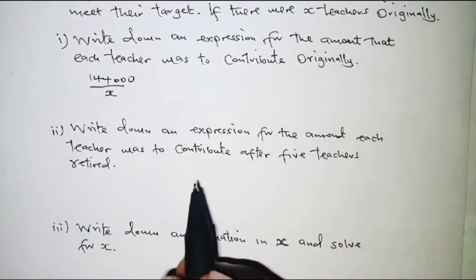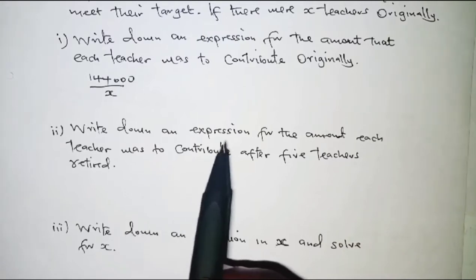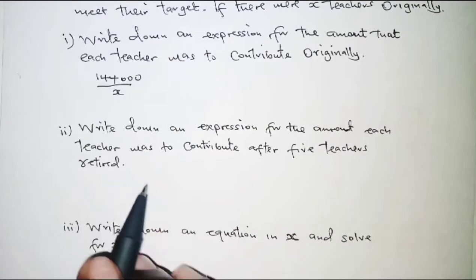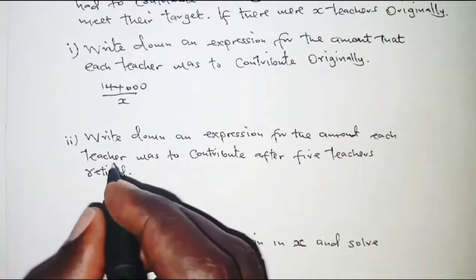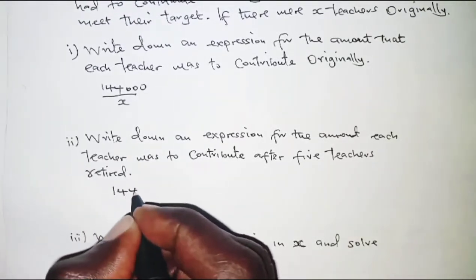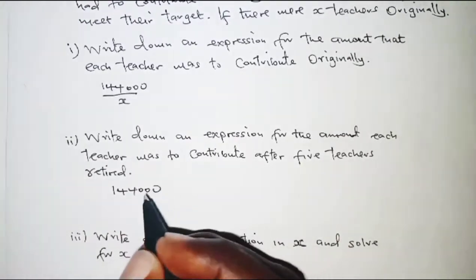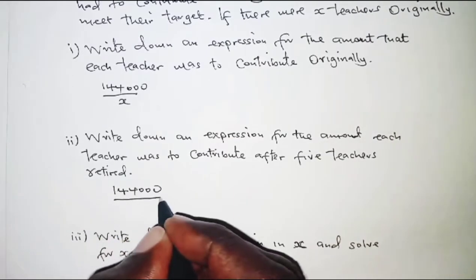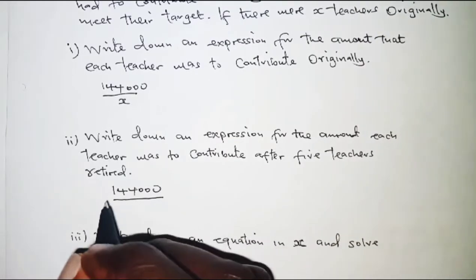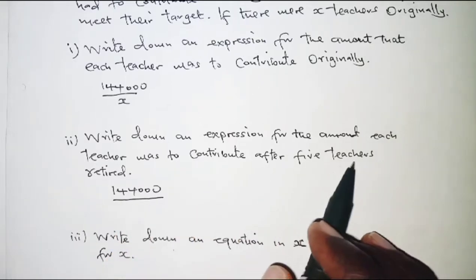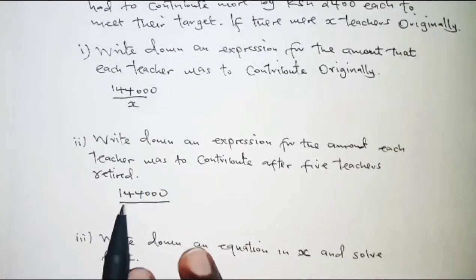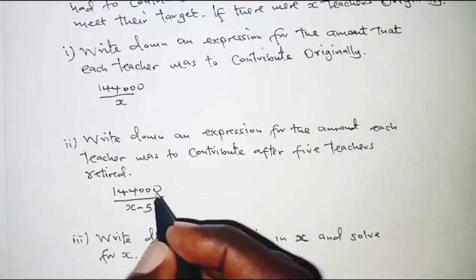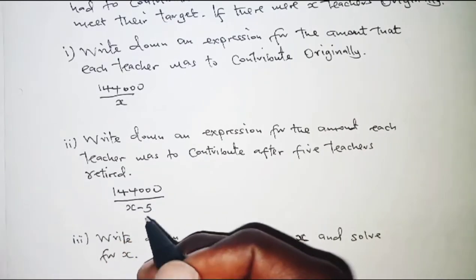Next we have to write down an expression for the amount each teacher was to contribute after five teachers retired. The amount to be raised is still 144,000, but this should be shared amongst the remaining teachers. Since five teachers had retired, we have x minus 5 teachers to share 144,000, giving us 144,000 over (x minus 5).